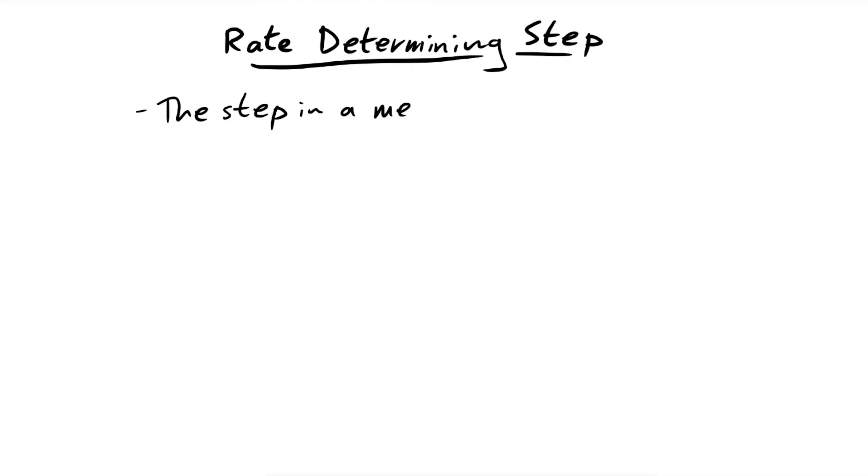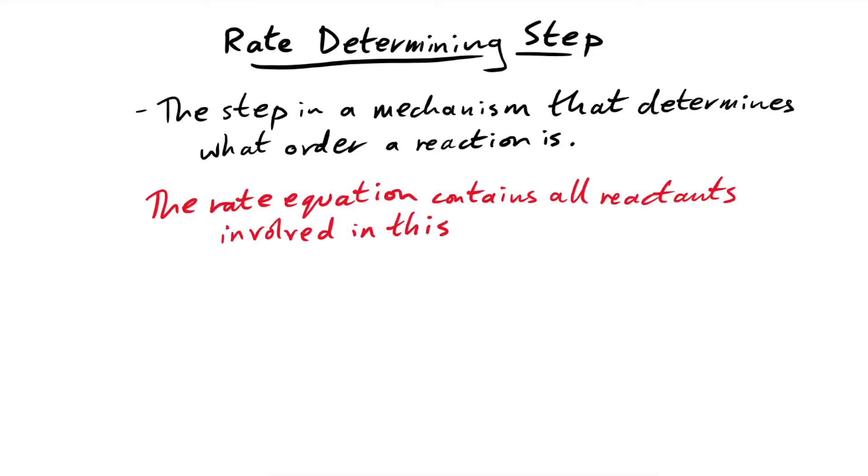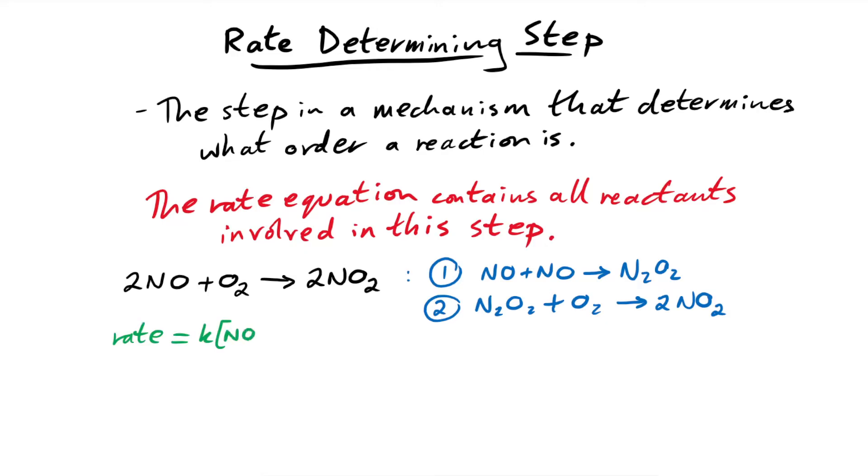And this is probably the most useful part of this whole thing, the rate determining step. This is the step in a mechanism that determines what order a reaction is. What we need to remember is that the rate equation for a reaction contains all of the reactants involved in this special step. So let's have a look at this reaction. 2NO plus O2 makes 2NO2. Now the mechanism involved in this reaction involves two steps. First of all, the NOs combine to make N2O2. Then that joins with the O2 to finally make the product.